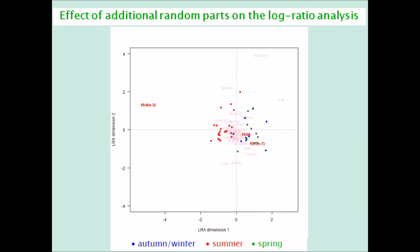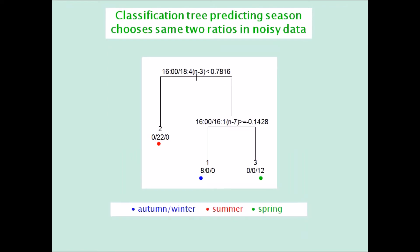For example, a simple classification tree approach chooses exactly these two ratios in this noisy data, and separates the seasons perfectly. These are chosen from the total of 780 possible ratios in this 40-part dataset.